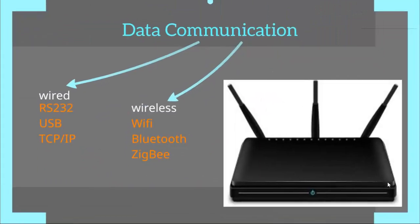For the purpose of communication of data, several ways exist in embedded systems. There are wired methods that use protocols like RS-232, USB, TCP/IP, etc. For wireless communication, one can opt for Wi-Fi, Bluetooth, Zigbee, etc. An example of a communication-based embedded system is a wireless router.